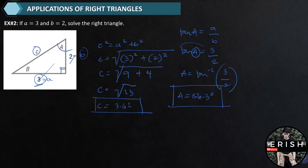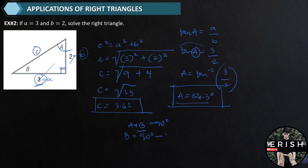To solve for angle B, we no longer need any trigonometric function — we simply do the arithmetic. By the principle that A plus B equals 90 degrees, B equals 90 degrees minus 56.3 degrees. Angle B is equal to 33.7 degrees. This gives us all the values needed for Example 2.